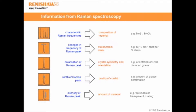We can also do something called polarised Raman measurements. These measurements allow us to identify the crystal symmetry and the orientation of the sample. So for example, we can look at the orientation of CVD diamond grains. We could also look at the polytypes of the material — we can determine if it's in its cubic form or its hexagonal form, for example.